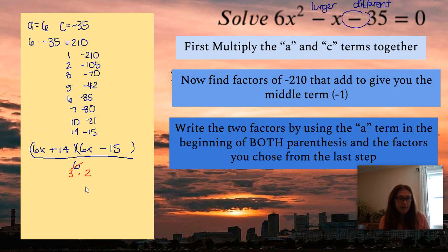Now what we're going to do is take one of them and divide by 3. And that would be the second parentheses here. So 6 divided by 3 is 2x. Negative 15 divided by 3 is negative 5.